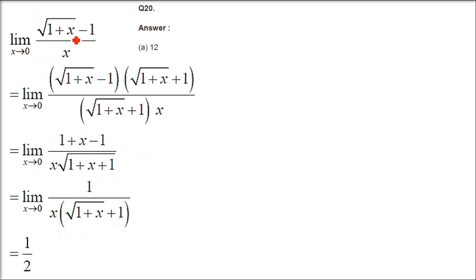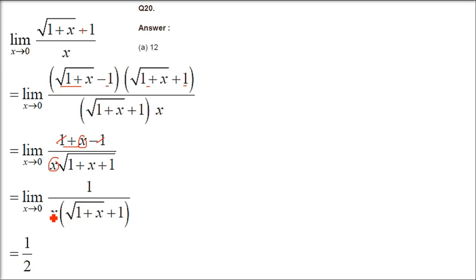Next is: under root (1 plus x) minus 1, divided by x, with limit x tends to 0. So we will multiply by the rationalizing factor. Take the conjugate — multiply numerator and denominator by (under root (1 plus x) plus 1). Using a² minus b², the x in the numerator and the x in the denominator cancel. So only in the denominator you have under root (1 plus x) plus 1.